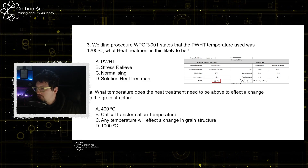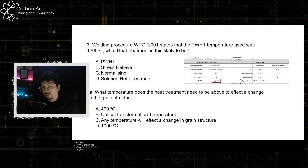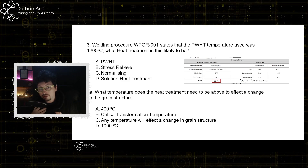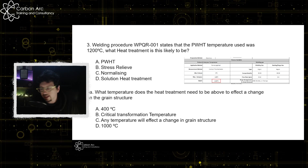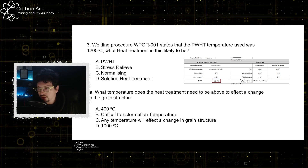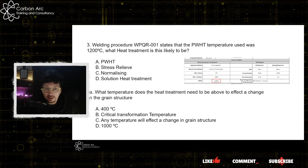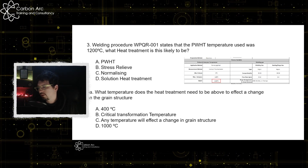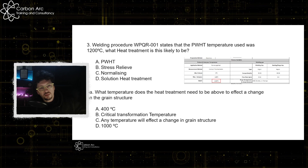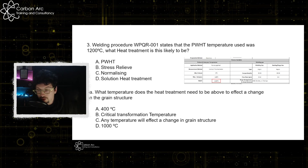What temperature does heat treatment need to be to affect a change on the grain structure? If you look at our video on the time-temperature transformation graph, we know we have to be above the critical transformation temperature — for a carbon steel that's around 720–723°C. If it's below that we won't get a change; it's fairly safe and we can do our stress relieves. But once we get above the critical transformation temperature, we run the risk of producing non-desired grain structures as we cool.